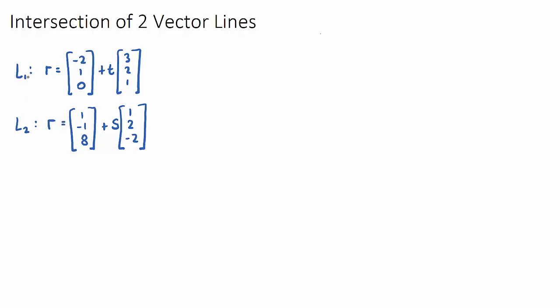So we have two vector lines here, two vector equations of lines, L1 and L2. What these look like, well we have L1 here, some line that's a vector equation of a line, and we might have L2 here.